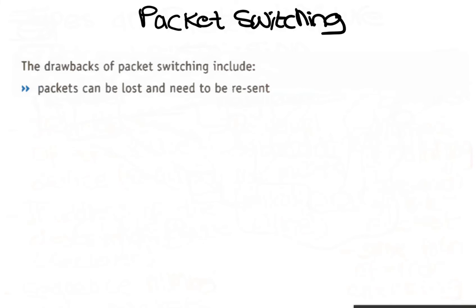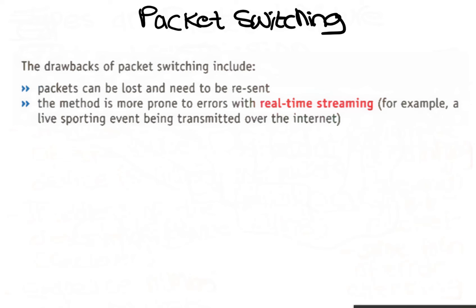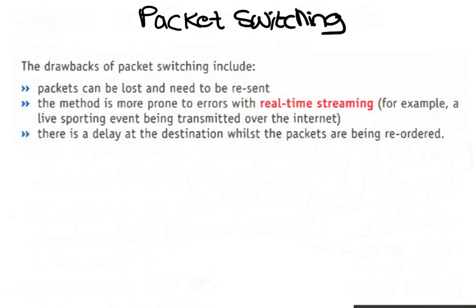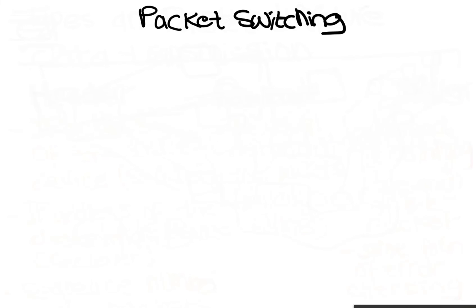The drawbacks of packet switching include: packets can be lost and need to be resent; this method is more prone to errors with real-time streaming, for example a live sporting event being transmitted over the internet; there is a delay at the destination unless the packets are being re-ordered; and sometimes packets can get lost because they keep bouncing around from router to router and never actually reach the destination.